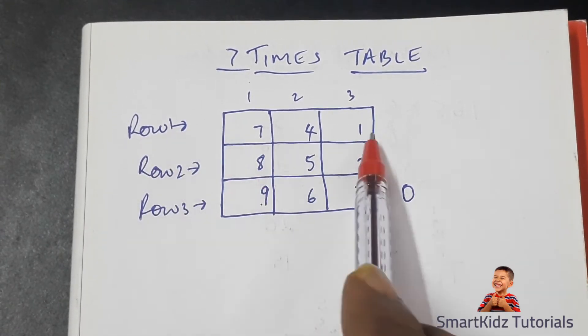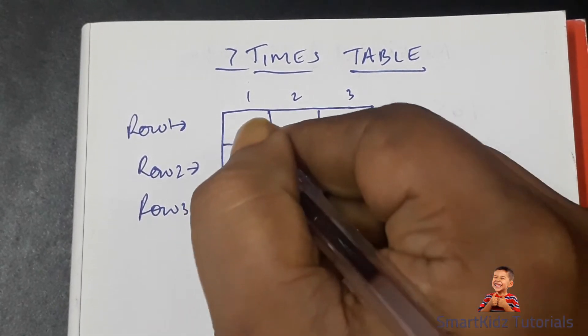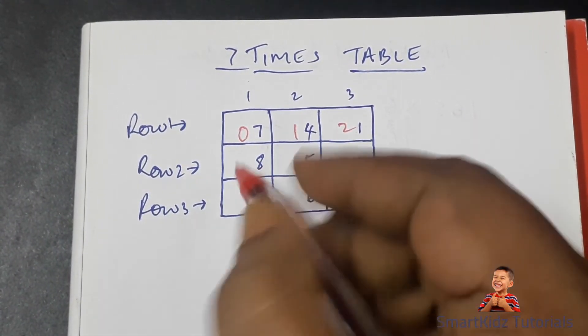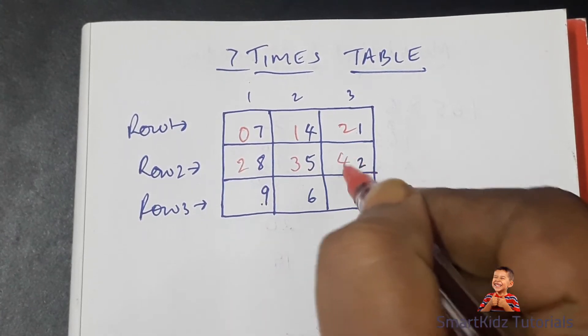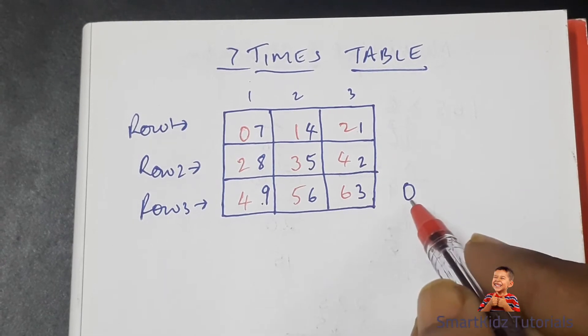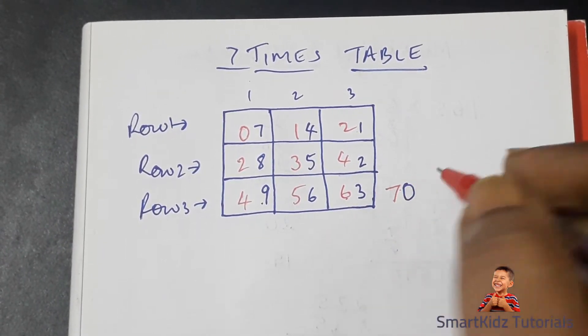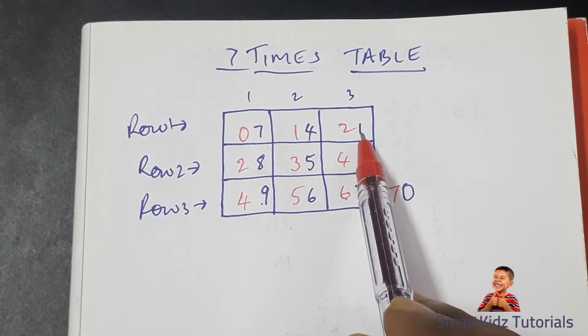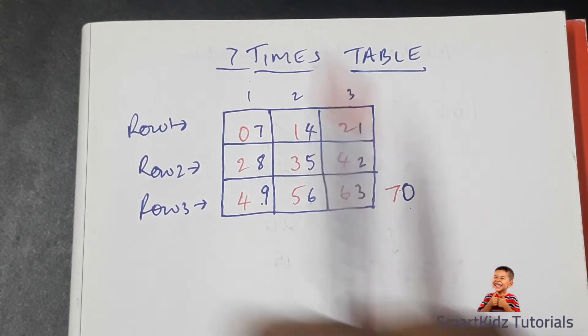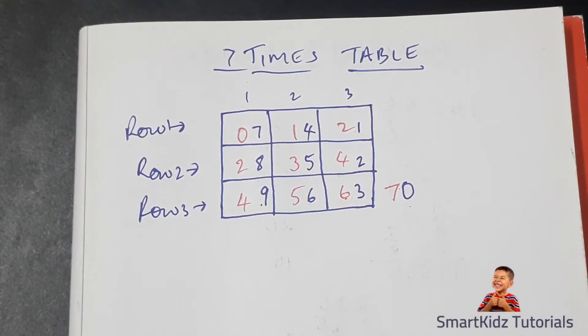Row one will be filled this way: zero, one, two. Then this two comes down, and it will be two, three, four. This four comes down - four, five, six. Since it is a zero, we change the number, and it becomes seven. So we have 7, 14, 21, 28, 35, 42, 49, 56, 63, and 70.